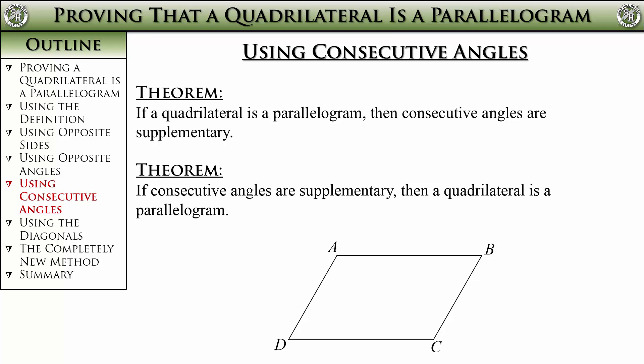So, let's cut down the work instead. If we show this pair of consecutive angles is supplementary, then we have just shown that those same side interior angles are supplementary, and thus, that these lines must be parallel. That's half the parallelogram.